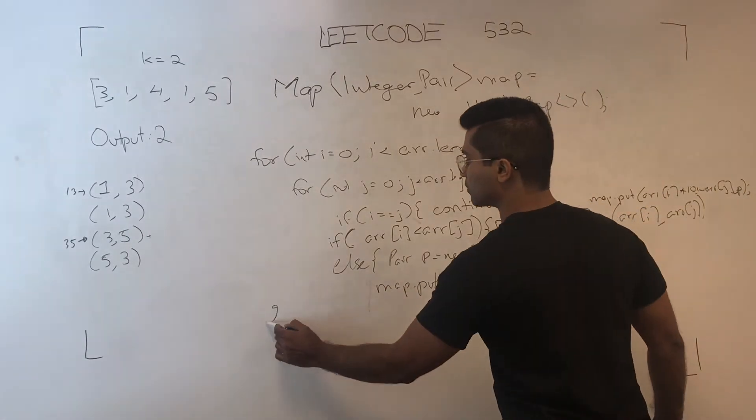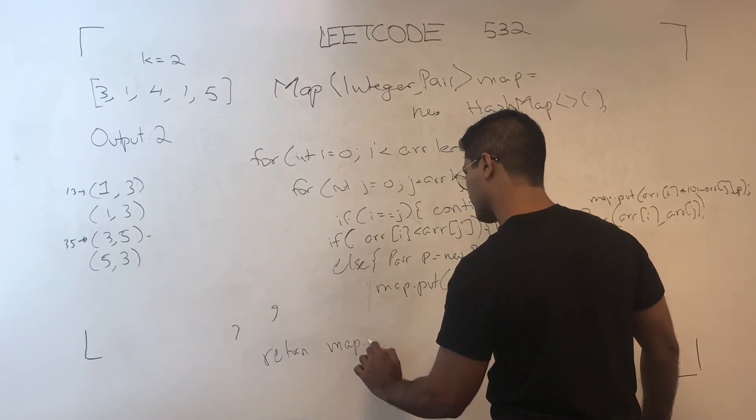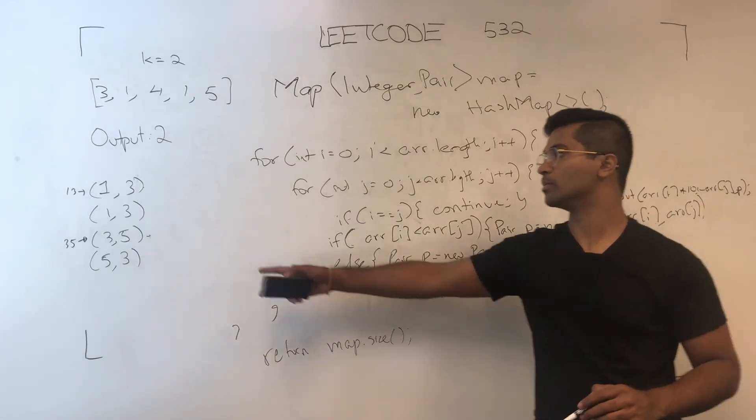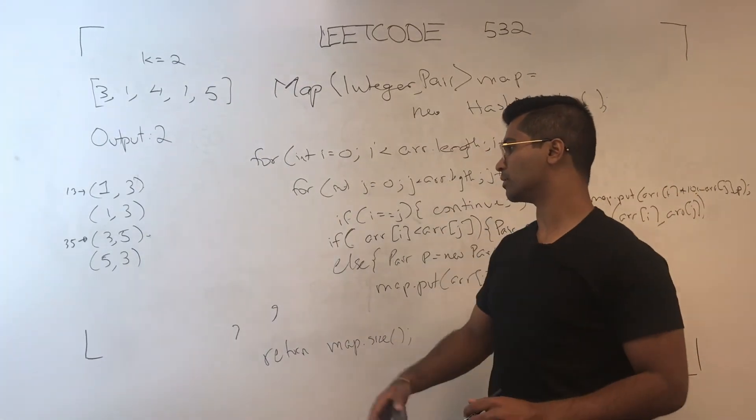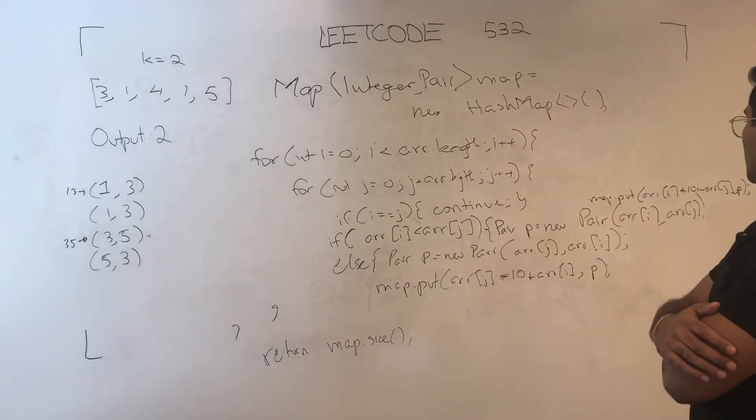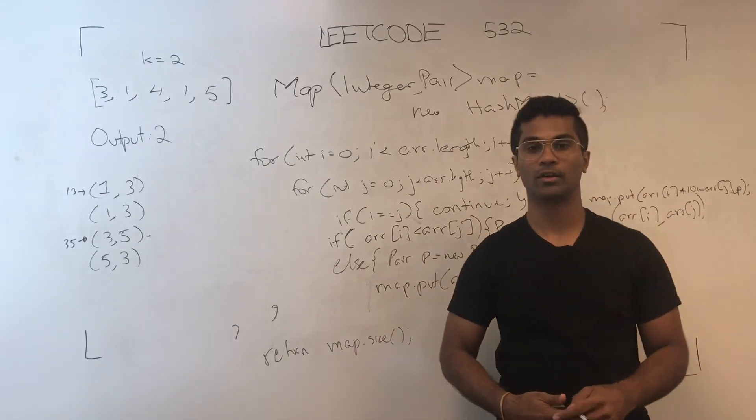That's the inner for loop, outer for loop, and then all we have to do is return map size, and we'll get 2, because this will only get stored in ascending order. That's how I solved LeetCode 532.